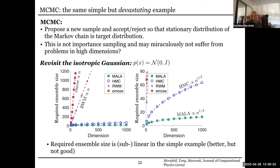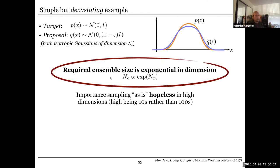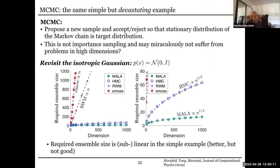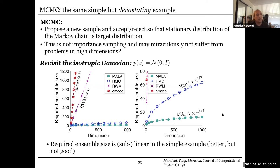Similarly, you can do a check for MCMC. I define a required ensemble size for a Markov chain Monte Carlo algorithm and look at how it scales as a function of dimension for the same simple Gaussian target distribution. The MCMC Hammer has a linear scaling in dimension. The random walk Metropolis also has linear scaling in N. Going to slightly more advanced samplers like Hamiltonian Monte Carlo, you get sublinear scaling; and for MALA, which uses gradients, you also see sublinear scaling. These are obviously better than exponential, but still pretty bad — especially considering how simple this problem is.